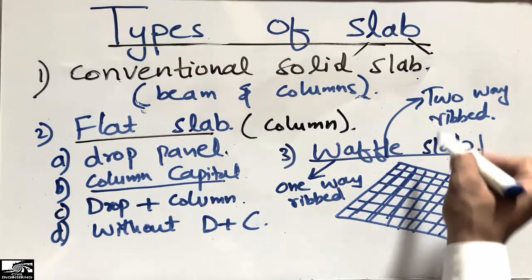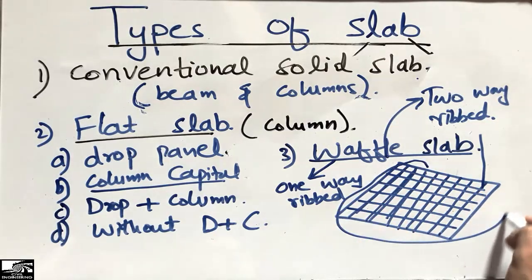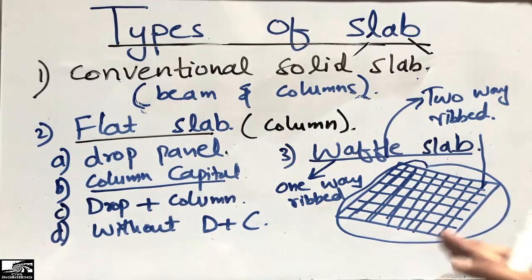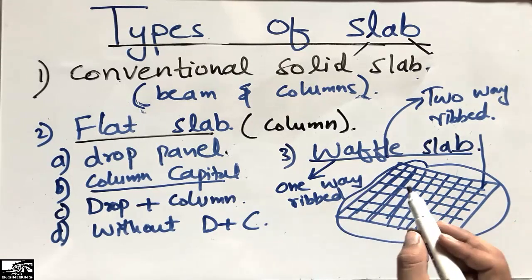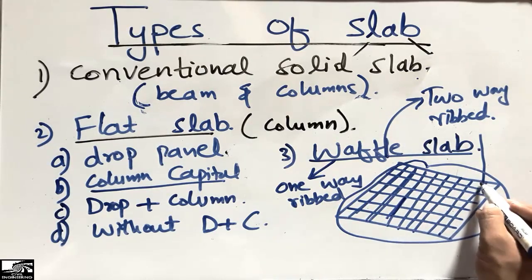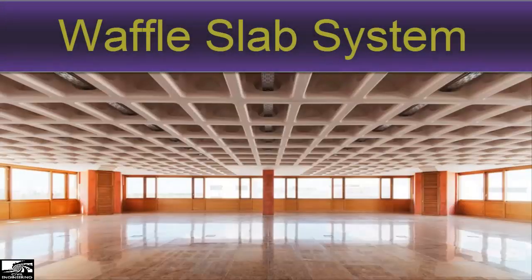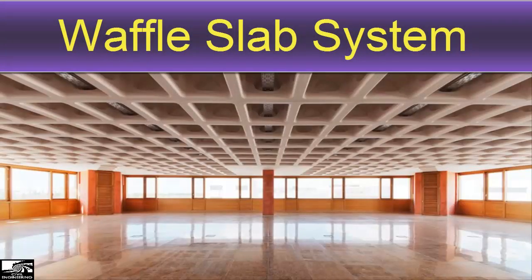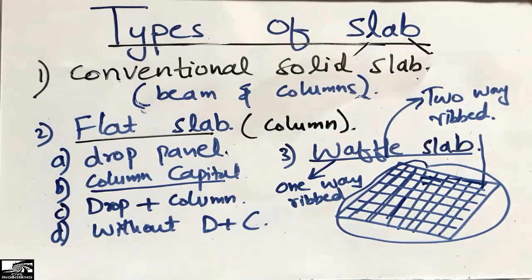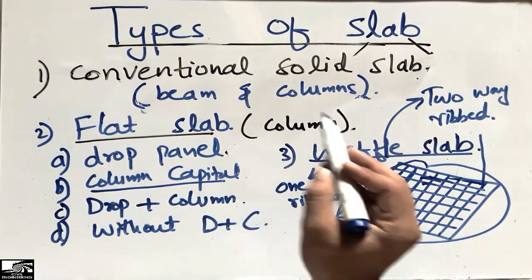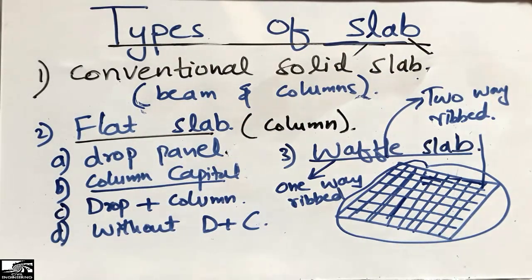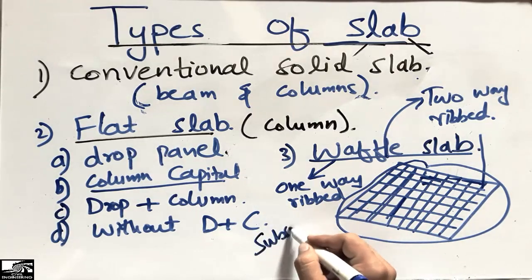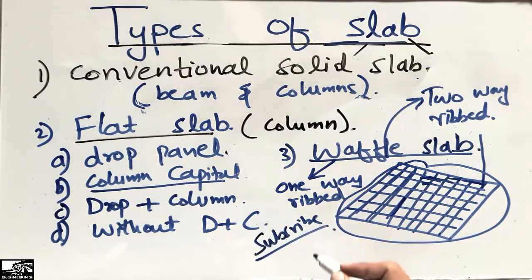The ribbed slab system is used in high-floor residential buildings where more headroom is needed, so full-depth beams are avoided and smaller-depth joists are used instead. So these were the three main types of slabs: conventional solid slab, flat slab, and ribbed slab system. Don't forget to subscribe our channel for more Seven Engineering videos. Thank you for watching.